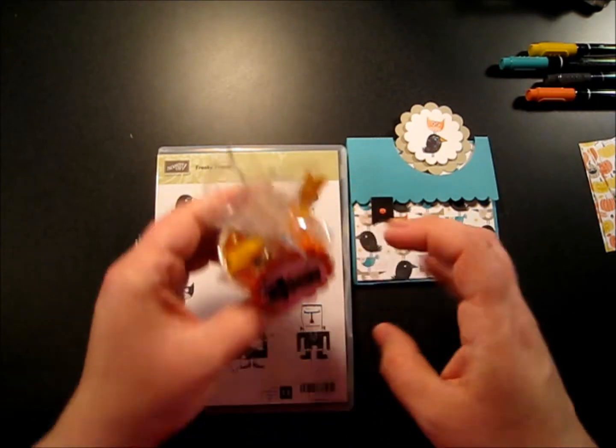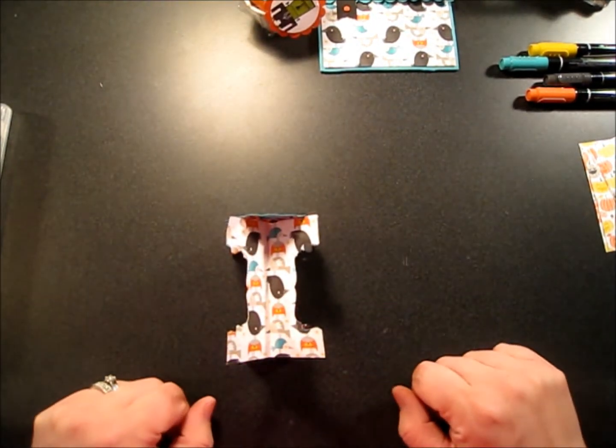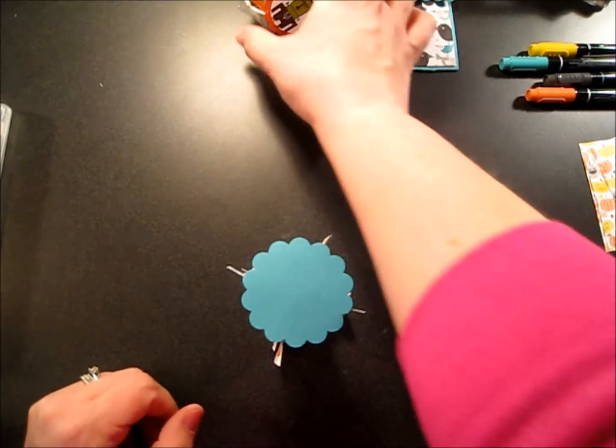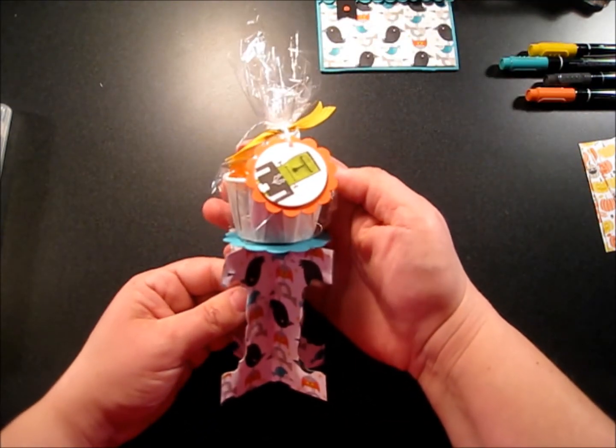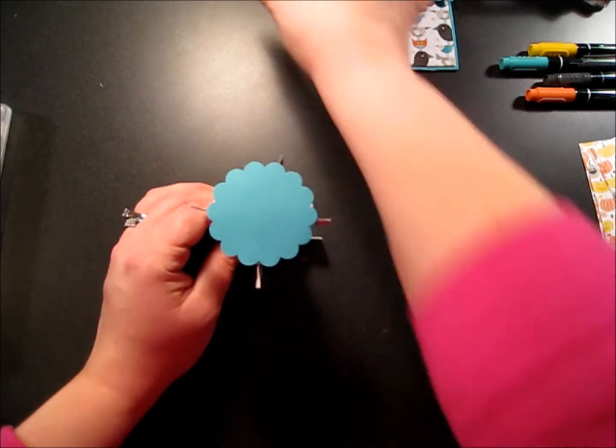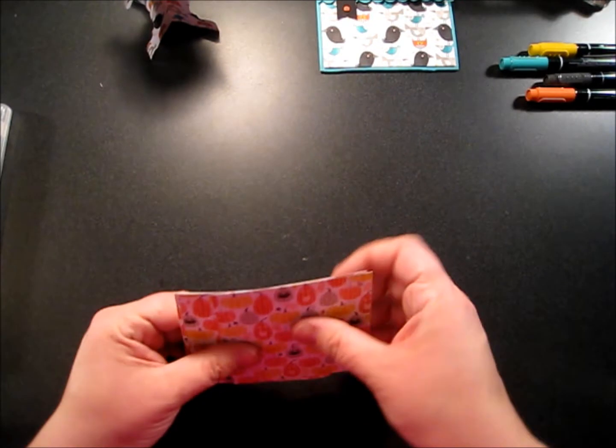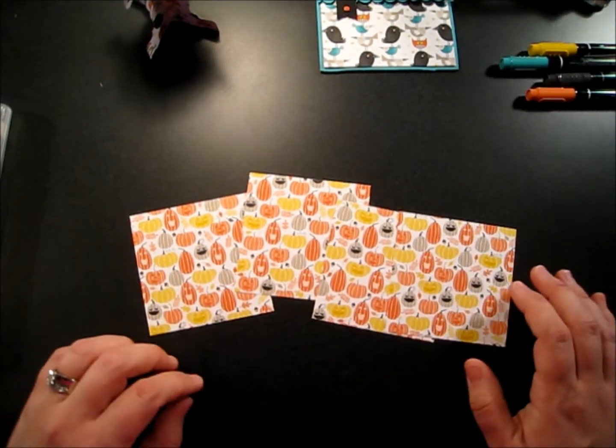So this was our little candy cup that we made, and then we made a stand for it. I'm going to show you how to make the stand. There's our card and our candy cup. Let me show you how to make the little candy stand that goes with it. This was our stamp club project. How cool is that?